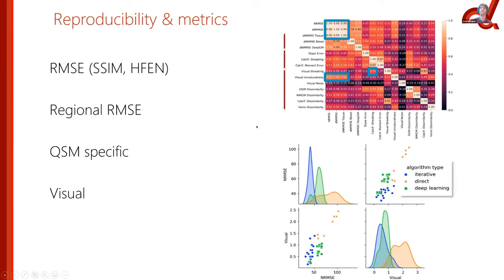Looking at how algorithms performed: here we have a plot of RMSE for iterative methods, direct methods, and deep learning methods. To our great surprise, in a time where everything seems to be deep learning, iterative methods based on regularization still gave the best RMSE metrics. Deep learning methods did perform significantly better in terms of visual rating, but still not quite at the level of iterative methods that are actually solving the physical process in a rigorous way.